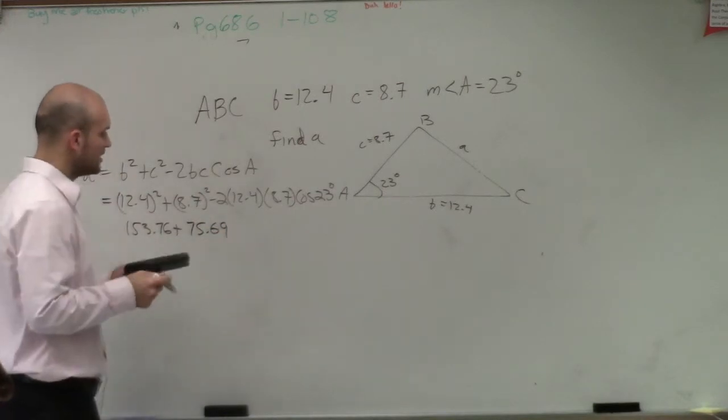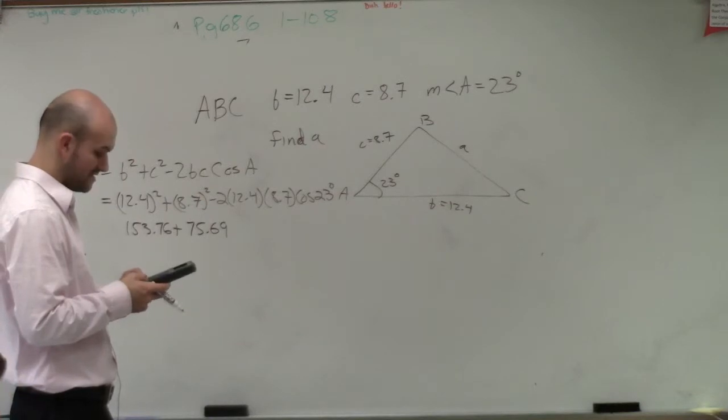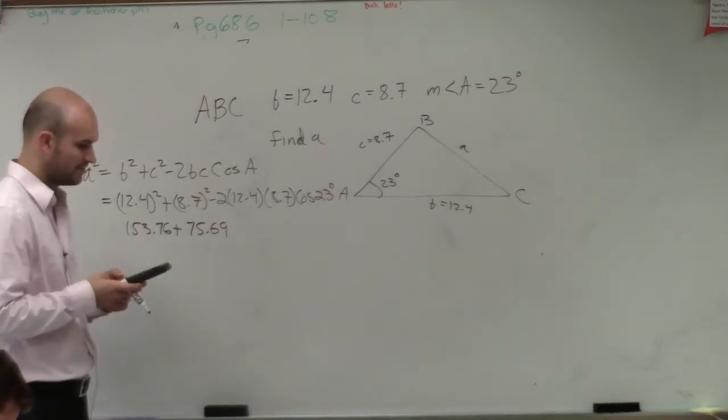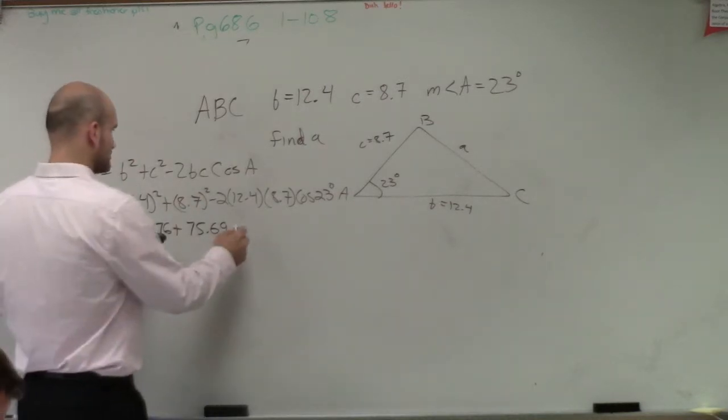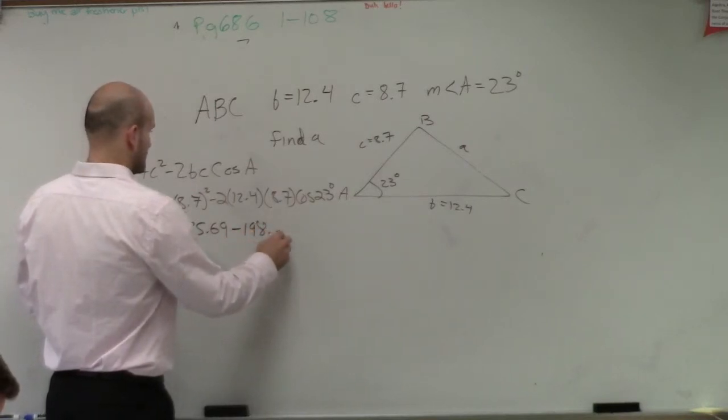And then I'll do negative 2 times 12.4 times 8.7 times the cosine of 23 equals negative 198.61.